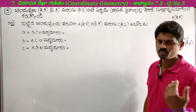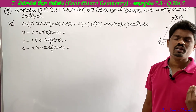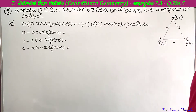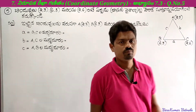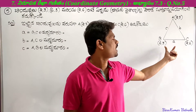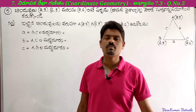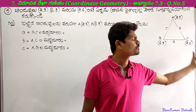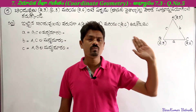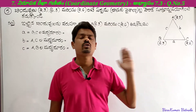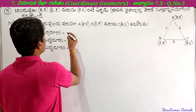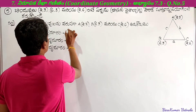So in this problem the triangle's vertices A, B, C are given. We will use the distance formula. Here A equals (2,3), B equals (6,3), C equals (2,6). Taking x1, y1 and x2, y2, the distance formula is square root of (x2 minus x1) whole square plus (y2 minus y1) whole square.